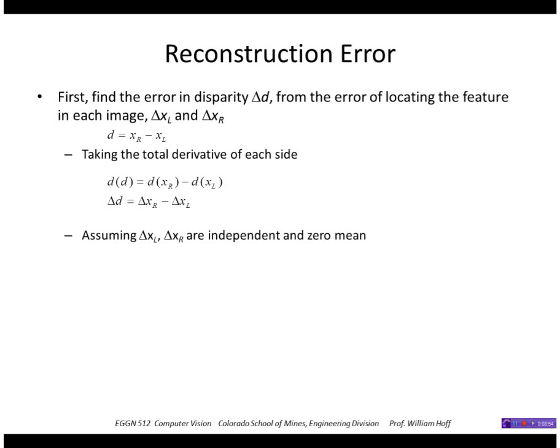We're going to assume that those errors in locating the features in the left and the right images are independent and zero mean. So the mean of the disparity is zero because the expected values of the individual components are zero. The variance we can find as the expected value of delta d minus the mean. I said the mean was zero, so it's just the expected value of delta d squared.